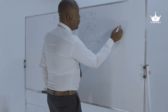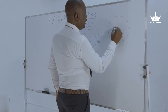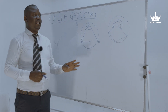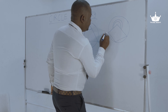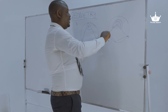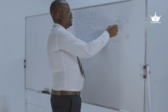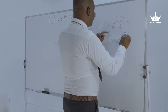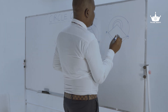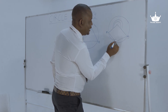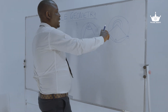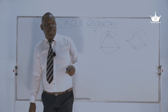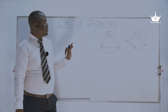Another example for angle subtension: I have a reflex angle labeled on the diagram. This arc AB — the bigger arc — is actually subtending this reflex angle. Again, this arc AB is also subtending angle A at the circumference. So it is my hope and expectation that everyone has understood what angle subtension is all about.